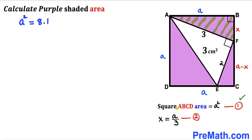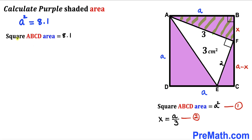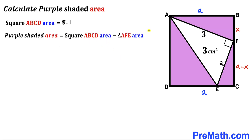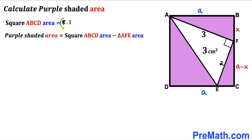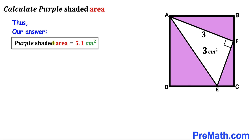From equation 1, the area of square ABCD equals a², which is 8.1 cm². Now for the final step: the purple shaded area equals the square ABCD area minus the white triangle AFE area. That is 8.1 minus 3, which gives us 5.1 cm². So the total purple shaded area turns out to be 5.1 cm². Thanks for watching and please don't forget to subscribe for more exciting videos.